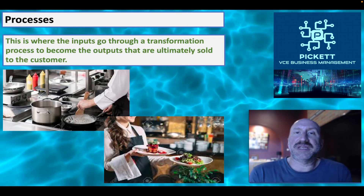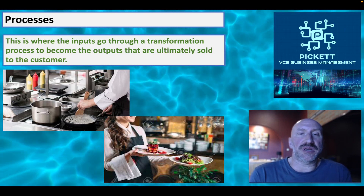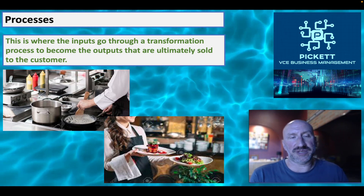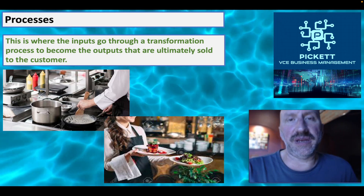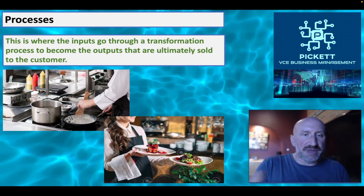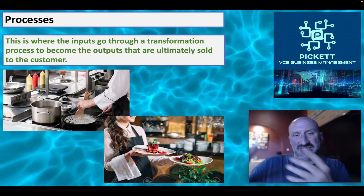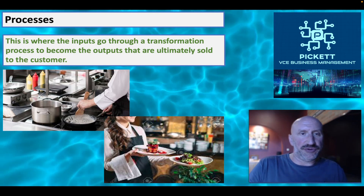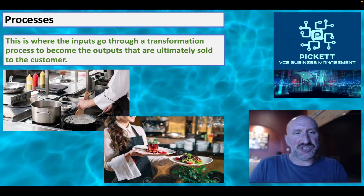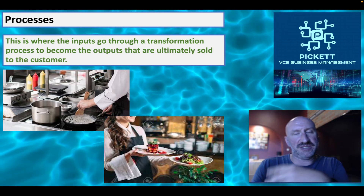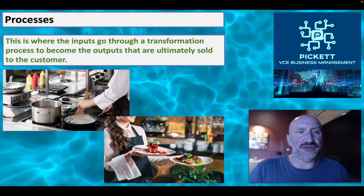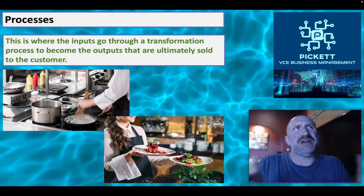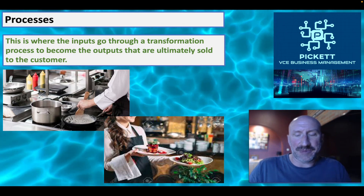Moving on to processes. This is where the inputs go through some kind of transformation process to become the outputs that are ultimately sold to the customer. A couple of examples: in a café or restaurant, one process is making the food in the kitchen, and another is serving it to the customer. Both are processes. You could break down food-making into many sub-processes, but whatever is happening in a business that converts those inputs into outputs counts. There could be thousands of processes in an individual business depending on what it does.